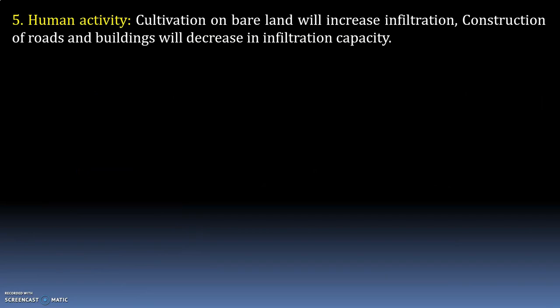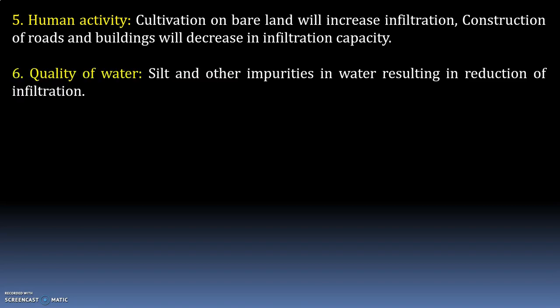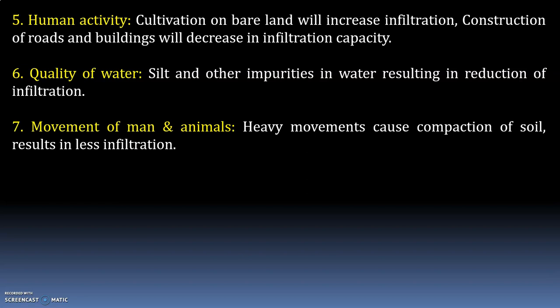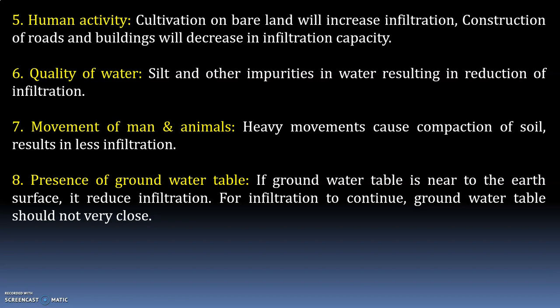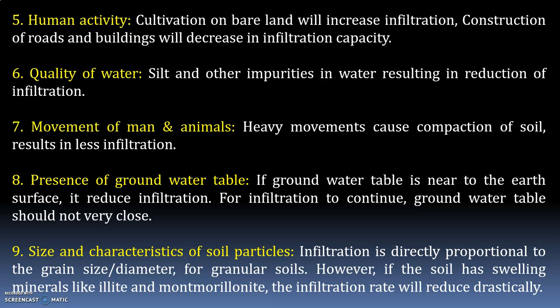Human activity: cultivation on bare land will increase infiltration, while construction of roads and buildings will decrease infiltration capacity. Quality of water: silt and other impurities in water result in a reduction of infiltration. Movement of man and animals: heavy movements cause compaction of soil, resulting in less infiltration. Presence of groundwater table: if the groundwater table is near the earth's surface, it reduces infiltration; for infiltration to continue, the groundwater table should not be too close. Size and characteristics of soil particles: infiltration is directly proportional to grain size for granular soils; however, if the soil has swelling minerals like illite and montmorillonite, the infiltration rate will reduce drastically.